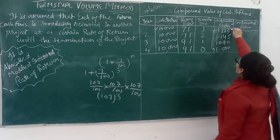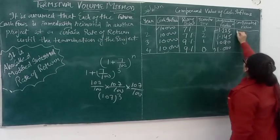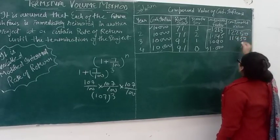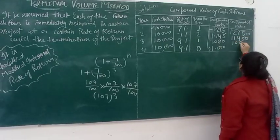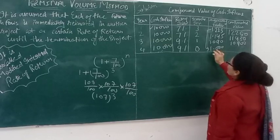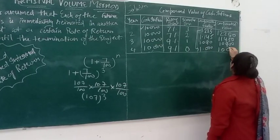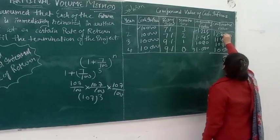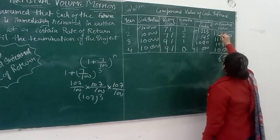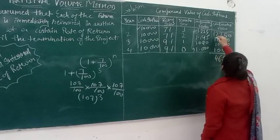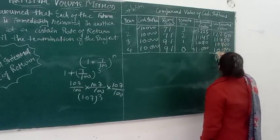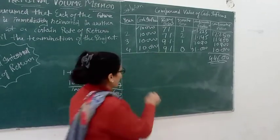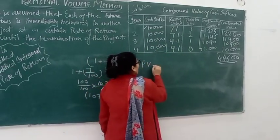Cash inflow multiplied by the compounding factor gives us the compounded values. The compounded values work out to approximately: 12,250; 14,500; 10,900; and 10,000 respectively for each year. So we now sum these compounded cash inflow values to get the total compounded value. Now let's apply the formula: Present Value equals the compounded value of all cash inflows divided by (1 + K) raised to the power n.